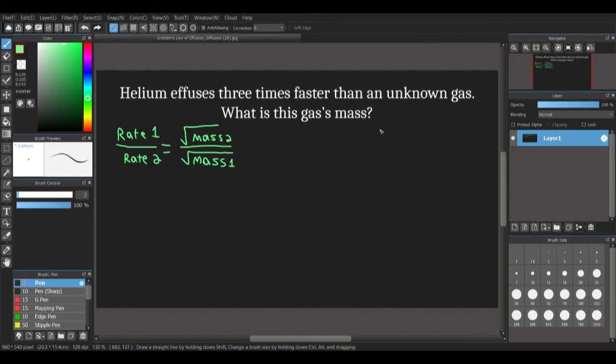And then we're going to decide which gas is going to be which. Here, we're going to make gas 1 helium, and we're going to make gas 2 our unknown gas.